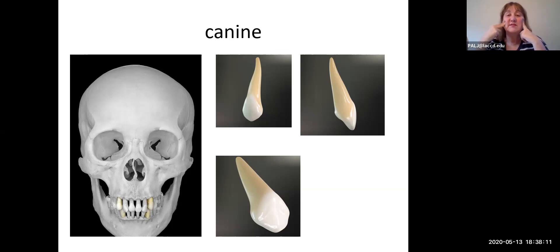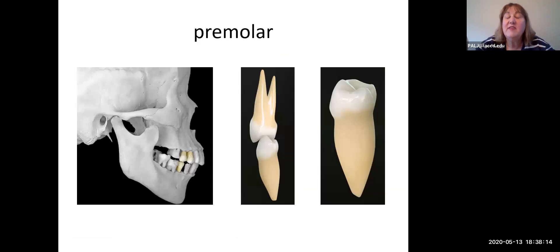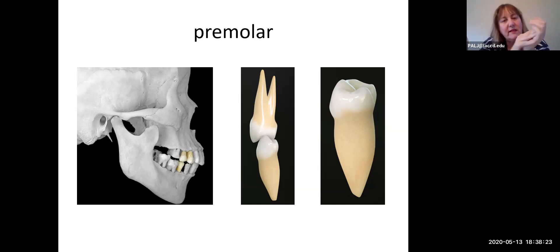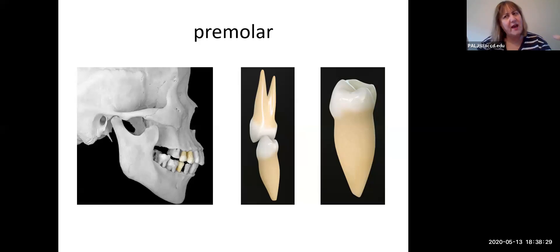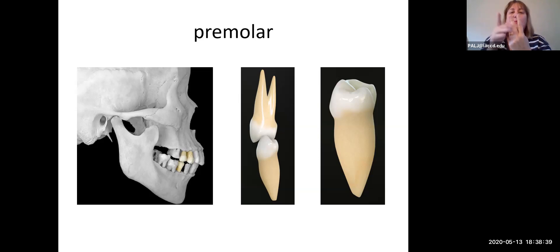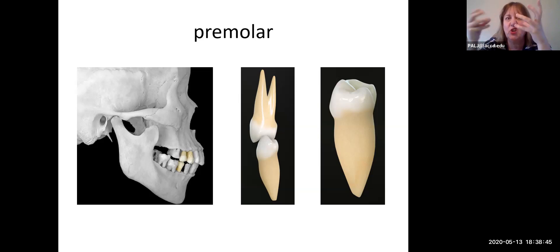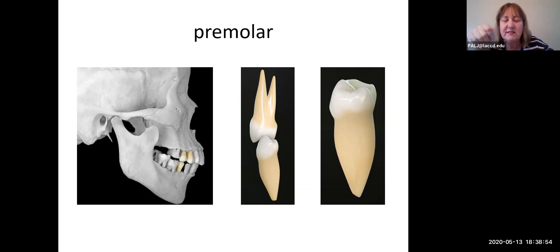The next two teeth — numbers four and five back on each side — are called premolars, sometimes called bicuspids. Look at the root: in the maxilla you can see two roots, but in the mandible there appears to be one very fat root because the two roots are often fused together. So instead of a skinny ice cream cone shape, the root is super fat.